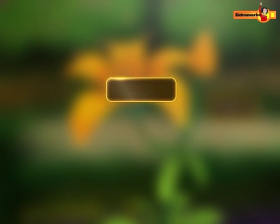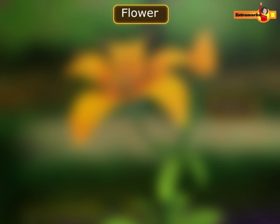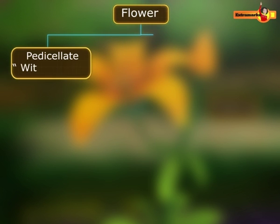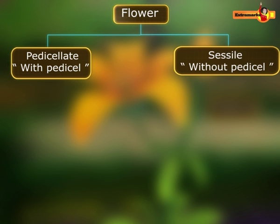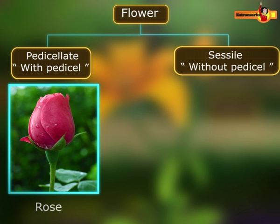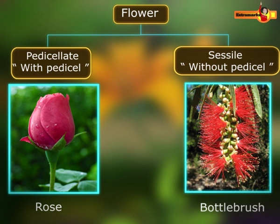On the basis of presence or absence of pedicel, flowers are classified into pedicellate and sessile respectively. Rose is a pedicellate flower while bottle brush is a sessile flower.